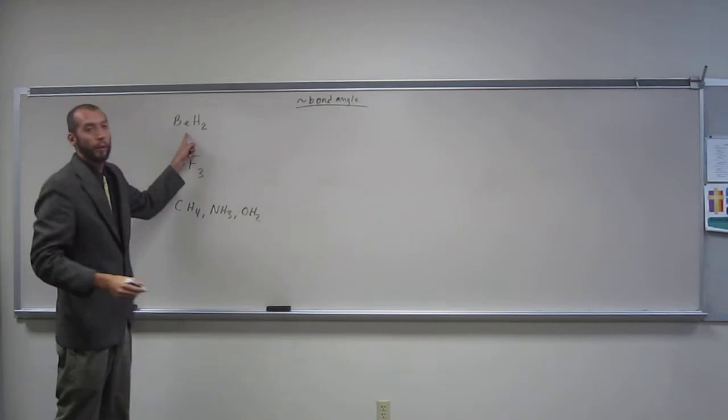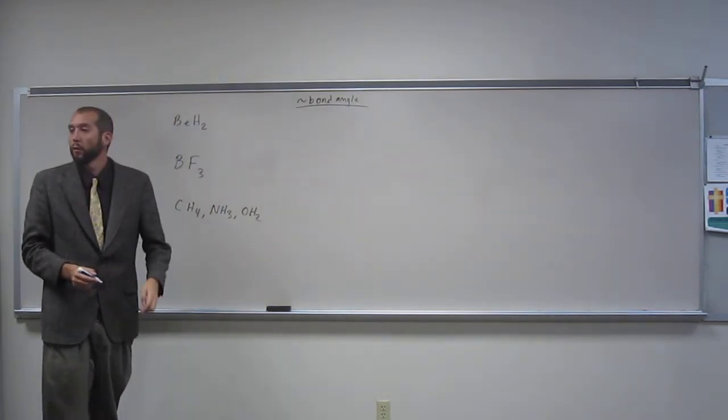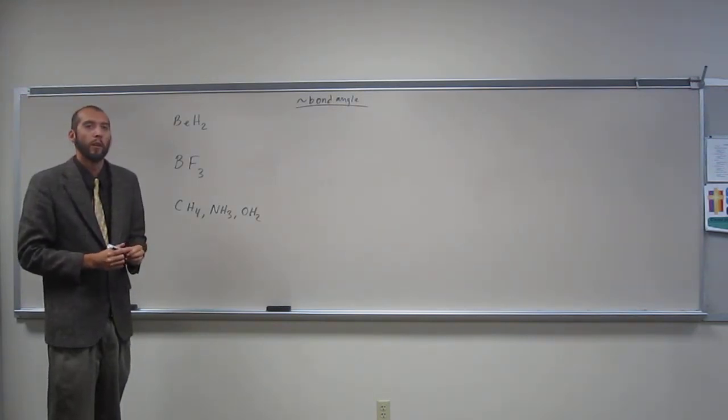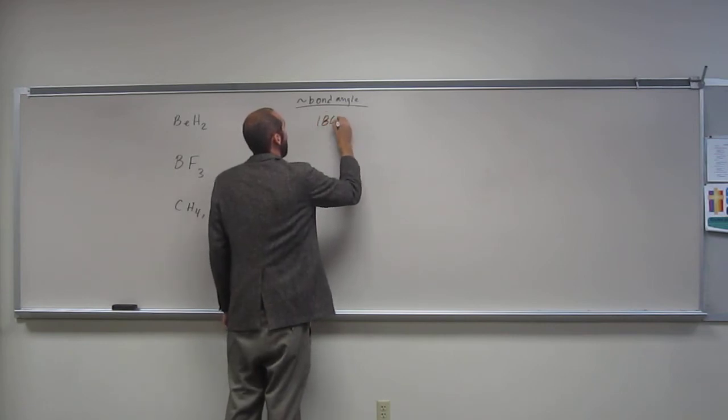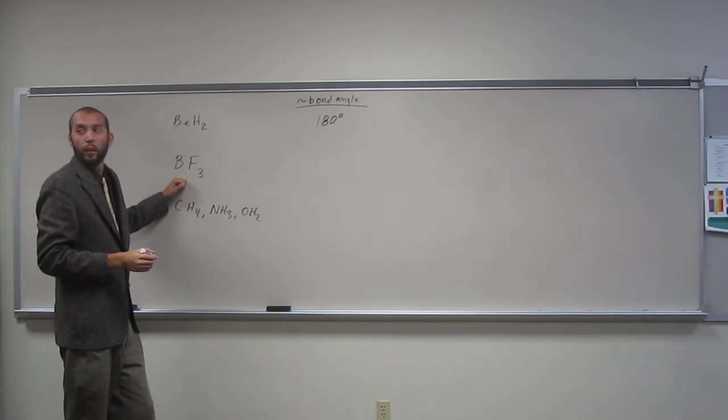So, what's the bond angle for the bond between two hydrogens in beryllium hydride? 180. And BF3? 120.